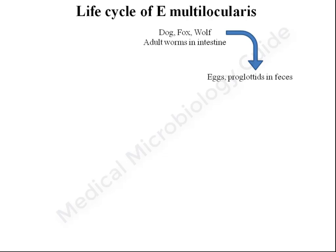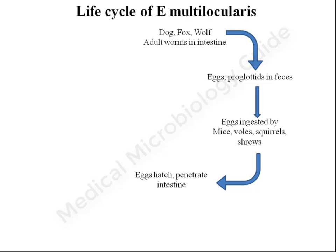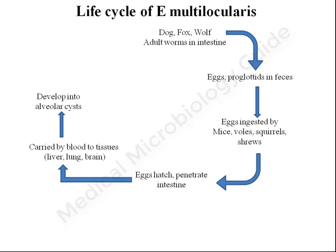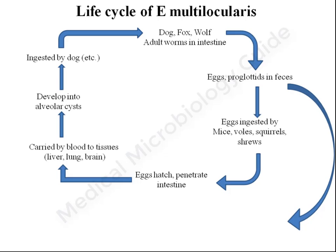The eggs and proglottids passed in the feces are ingested by the intermediate host. The eggs once ingested will hatch, and the oncosphere will penetrate the intestine. These oncospheres are carried by blood to the tissues, where they develop into alveolar cysts. When the infected intermediate host is eaten by dogs, wolves, or foxes, the protoscolices get converted into adult worms and the life cycle continues. Man can get infection by eating contaminated food or water, or by directly handling animals infected with Echinococcus multilocularis.